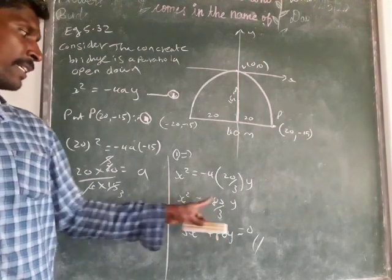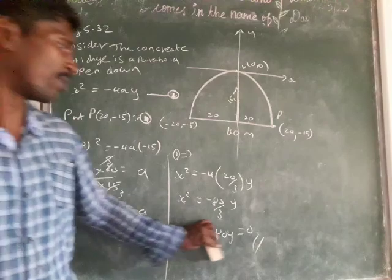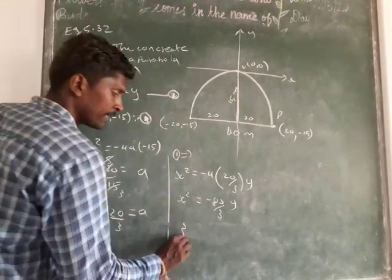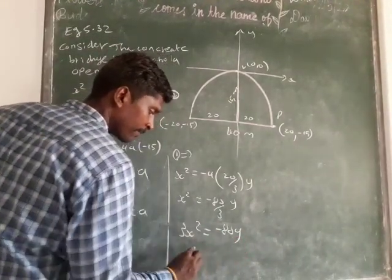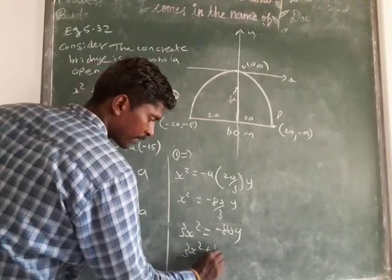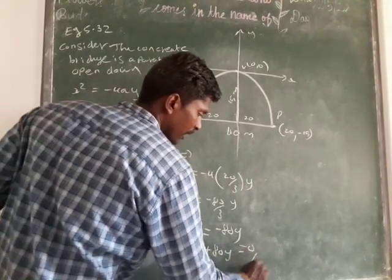Then we have 3x plus multiplied. So -80y come to this side. We can take it any form, no problem. 3x² + 80y = 0. This is the required equation.